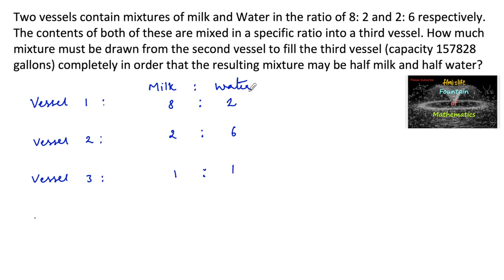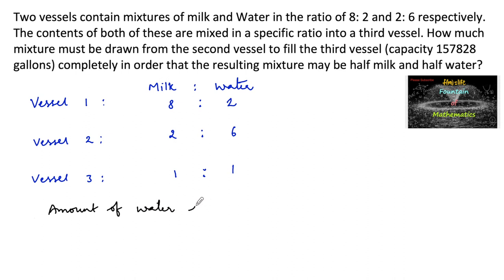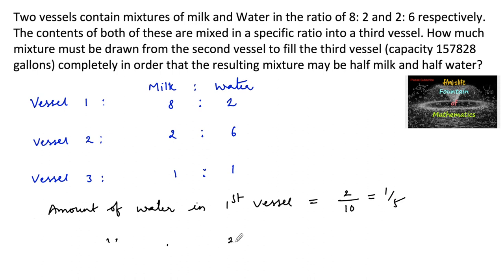Let us consider any one quantity, either milk or water. Let's consider the water. The amount of water in the first vessel is 2 out of a total of 8 plus 2, that is 10. So 2 out of 10, which is 1/5. And the amount of water in the second vessel...